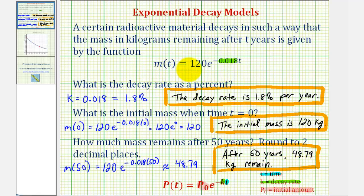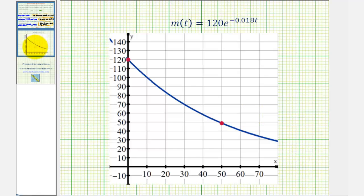Before we go, let's take a look at the graph of our function. Notice how for exponential decay, the function is decreasing. When we found the initial amount, or when t equals zero, we found the function value here at 120.